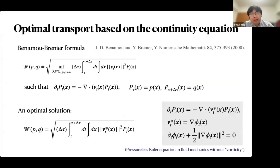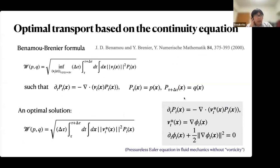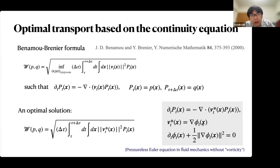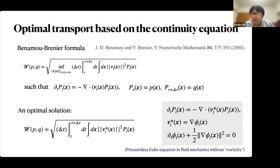Next, I would like to explain optimal transport based on dynamics and continuity equations. We consider the continuity equations and the L2 Wasserstein distance is given by an optimization problem with fixed initial and final distributions. The solution is given by a velocity field — the velocity field is given by the gradient of a potential. This is related to the pressureless Euler equation in fluid mechanics without vorticity. Intuitively, optimal transport is a kind of transport without vorticity.